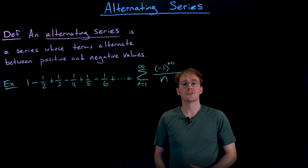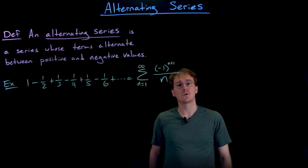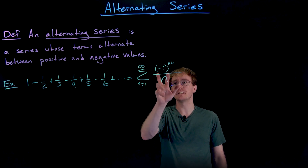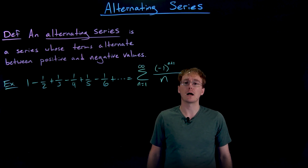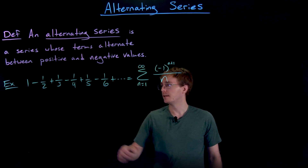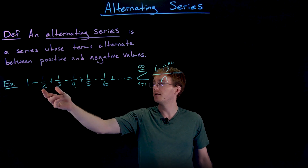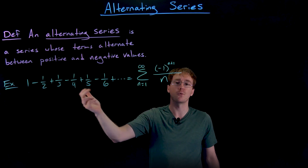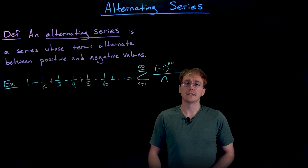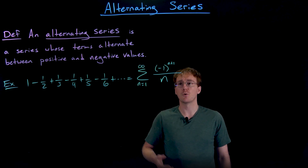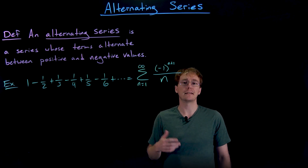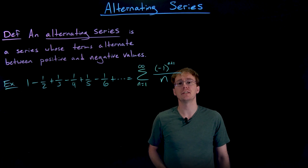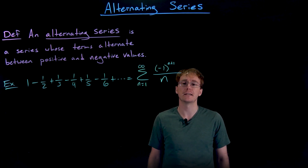Here is one way to express our alternating harmonic series using sigma notation. We can write it as the sum from n equals one to infinity of the quantity negative one raised to the power of n plus one, divided by n. When we are looking at an alternating series in sigma notation, we'll often see something like negative one raised to the power of n, or n plus one, or n minus one — and that is a good indicator that you are most likely working with an alternating series.